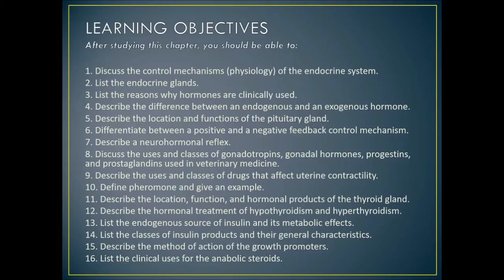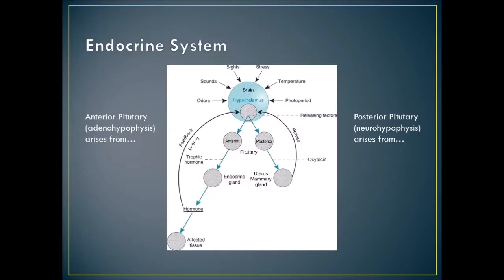Here are your learning objectives. We need to know about the endocrine system, how it functions, the neurohormonal reflex, specific classes of gonadotropins, gonadal hormones, progestins, prostaglandins, drugs that affect uterine contractility, pheromones, thyroid treatments, hypothyroidism, hyperthyroidism, insulin products, growth promoters, and anabolic steroids. These are things you should remember from your anatomy and physiology course.